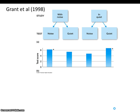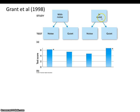Baddeley also did a less extreme version of this experiment using regular studying. People who studied with background noise and were then tested with background noise remembered much better than those who studied with noise but were tested in quiet. Likewise, studying in quiet but being tested with noise led to lower memory than studying and testing in quiet. The environment needs to match for optimal memory.